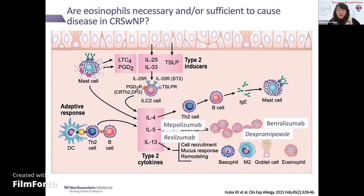Based on this, the question remains: are eosinophils necessary and/or sufficient for causing or contributing to disease? The verdict is still out. We do think they are biomarkers, and they may be contributing something. You're going to hear more about targeting IL-5 and biologics from the next two speakers. And perhaps there are other targets of these drugs that may be contributing to CRS pathogenesis. I'd like to end with one slide on the basophil.